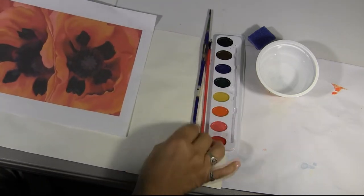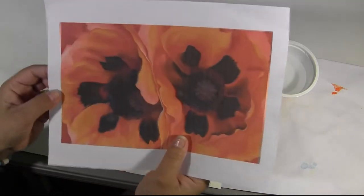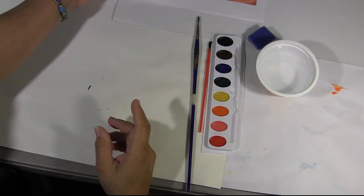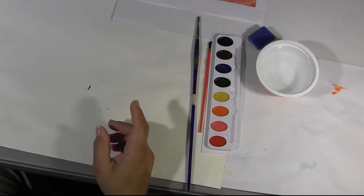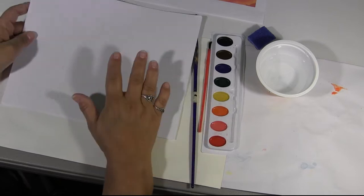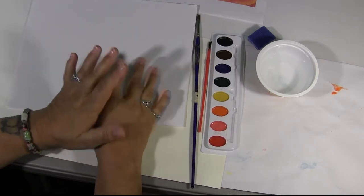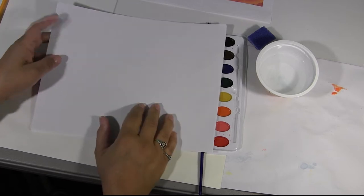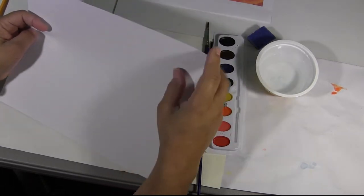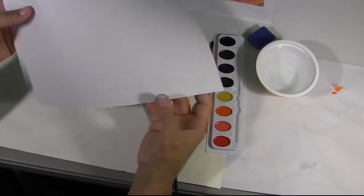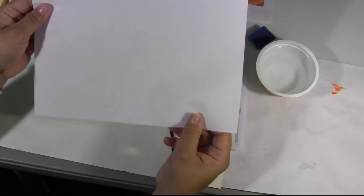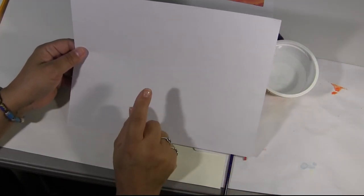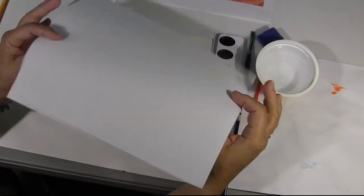Here we are getting ready to start our watercolor project. Normally most people that paint with watercolors will use watercolor paper because it's stronger and you're going to be using a lot of water. If you can get watercolor paper that would be perfect. But I'm going to show you how to do it on regular white paper, just so that you know that you don't have to get watercolor paper. Now it's a little trickier to do with regular paper because it's so thin.